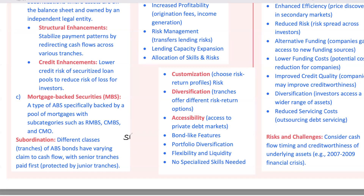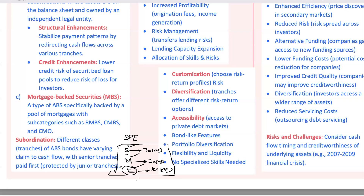Let's illustrate this with a quick example. Suppose an SPE issues three tranches in an ABS deal. The senior tranche, valued at $70 million, has the highest credit rating and offers the lowest yield. Next, the mezzanine tranche, worth $20 million, carries a medium yield with moderate risk. Finally, the equity tranche, valued at $10 million, has the highest yield and highest risk, because it absorbs any potential losses first. Cash flows are distributed in that order — senior tranche first, mezzanine next, and equity last — giving each tranche a different level of protection and risk exposure. In the case of any losses, the equity tranche takes the hit, protecting the senior tranches. This layered structure is what allows ABS to cater to a broad range of investor preferences, from conservative to aggressive.